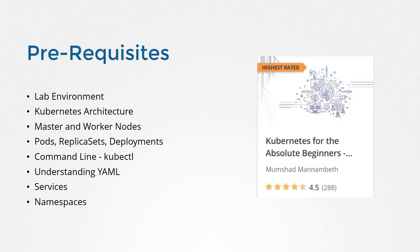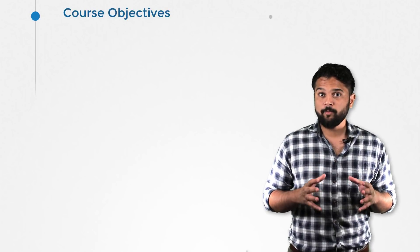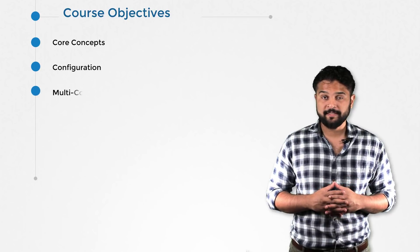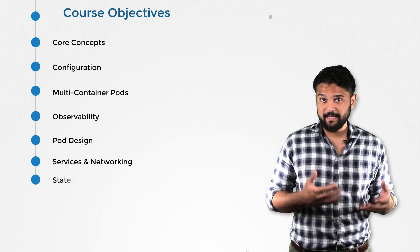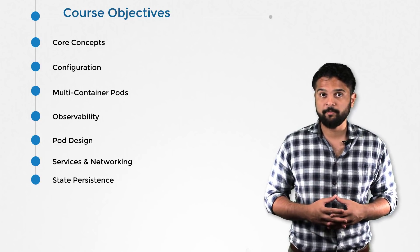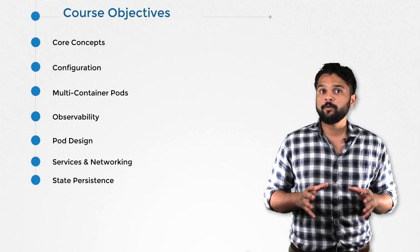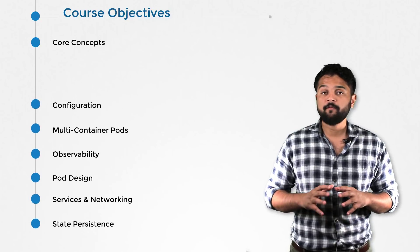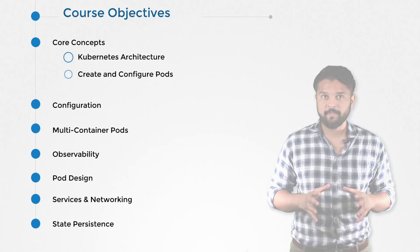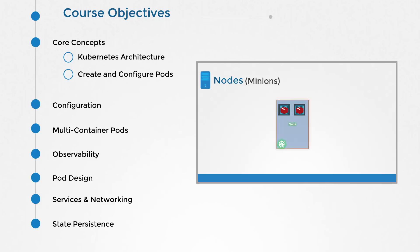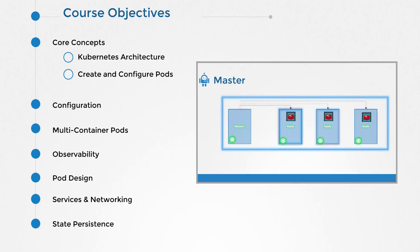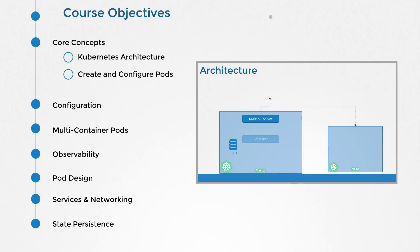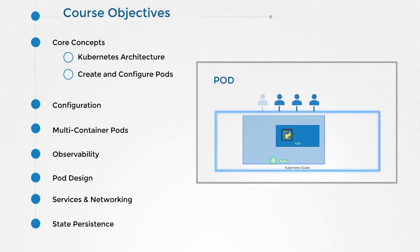Let us now look at the course objectives. The objectives of this course are aligned to match the Certified Kubernetes Application Developer Exam curriculum. We will discuss details around the certification itself in one of the upcoming lectures before heading into any of these topics. We start with the core concepts — we have covered a lot of these in the beginner's course, but we will recap some of them to refresh our memory, such as the Kubernetes architecture and what pods are and how to create and configure pods.